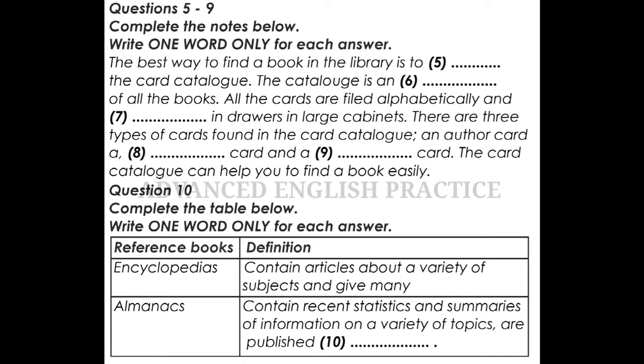Indexes are alphabetical lists of names, titles and subjects that tell where information about each can be found in other publications. For example, the Reader's Guide to Periodical Literature can help you find magazine articles published about a particular subject. It gives you the names of publications that have carried articles, the dates and volume numbers of the particular issues. You should be aware that reference books may not be taken out of the library under any circumstances. They are used only in the library.